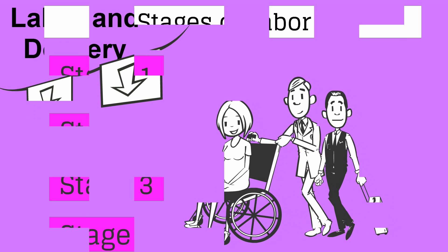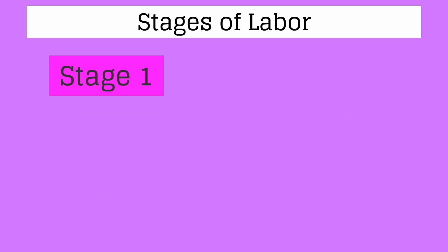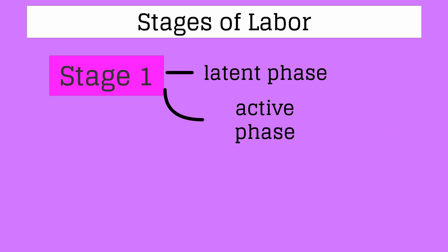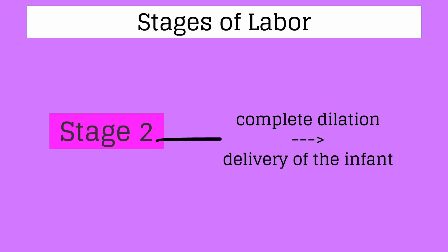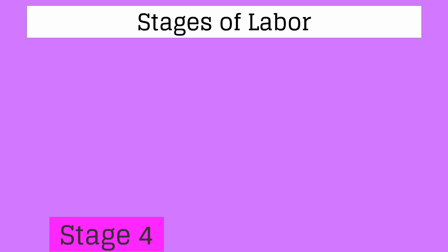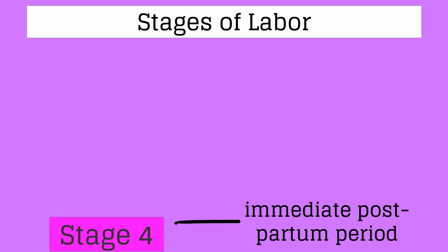Lavora is admitted to labor and delivery. There are 4 stages of labor. Stage 1 is from the onset of labor to full cervical dilation, divided into the latent phase (up to about 4 cm, variable in length) and the active phase (starting at about 4 cm, with cervical dilation of approximately 1.2 to 1.5 cm per hour). Stage 2 is from complete dilation to delivery of the infant. Stage 3 is from delivery of the infant to delivery of the placenta. Stage 4 is the immediate postpartum period of approximately 2 hours after placental delivery.